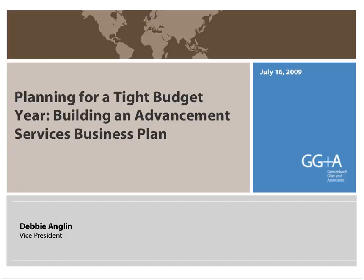Good morning, everyone. I think we're going to get started here. My name is Jill McDonnell, and I will serve as your host for today for GG&A's webinar, Preparing for the Tight Budget Year: Building an Advancement Development Services Business Plan. Today we'll review the functional areas of advancement and development services and detail the necessary steps for a successful business plan. Feel free to ask questions throughout the session using the question icon, and we'll address them at the conclusion. I'd like to turn it over to our presenter today, GG&A's Senior Vice President, Debbie Englund.